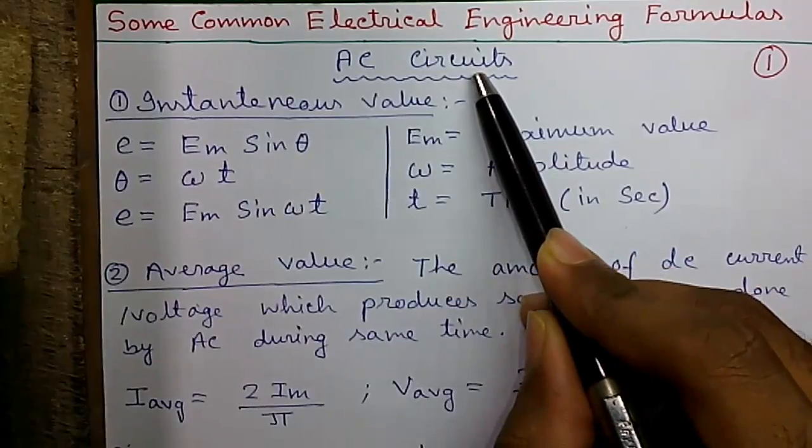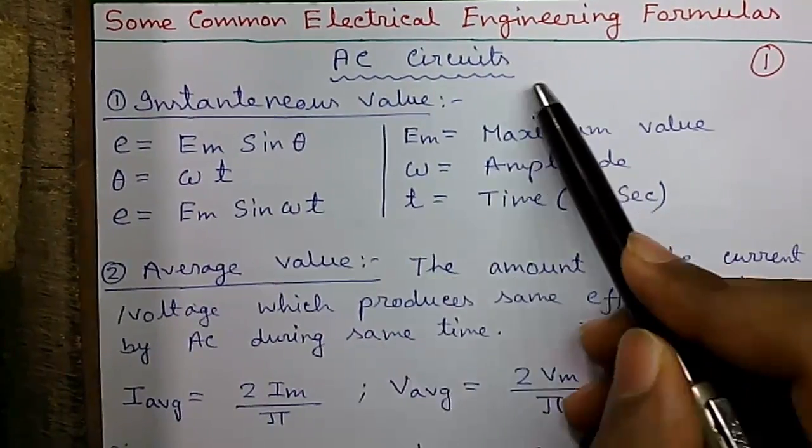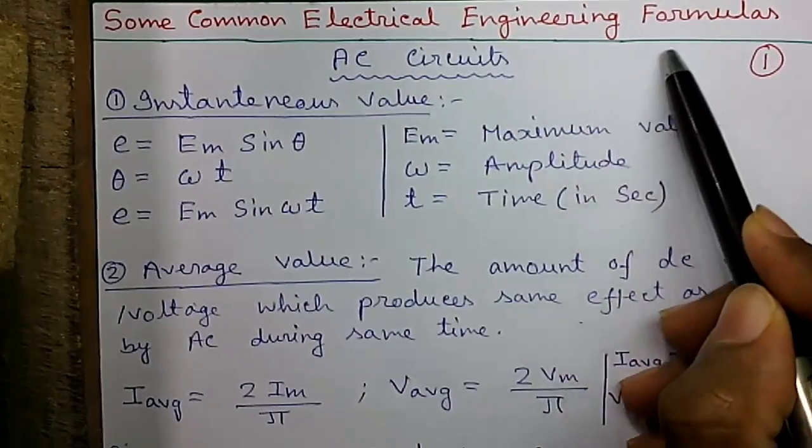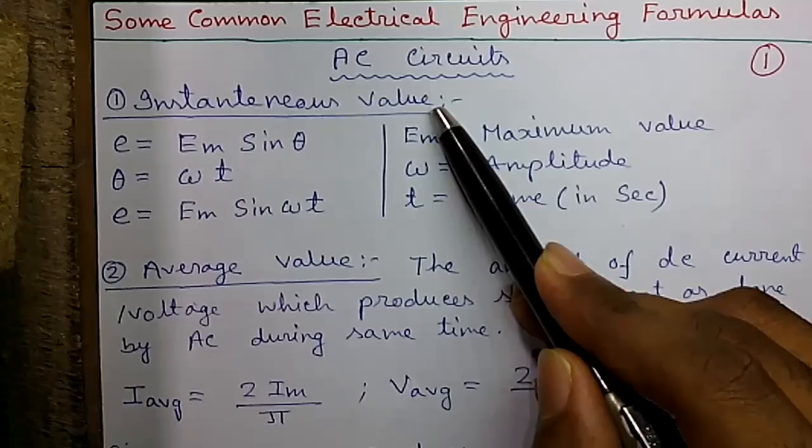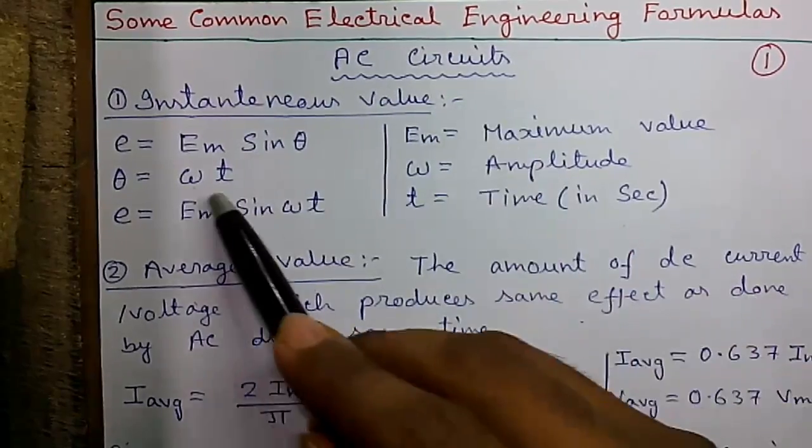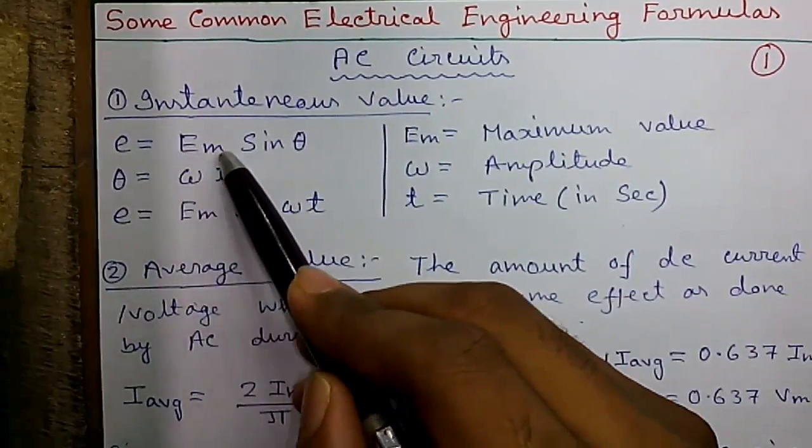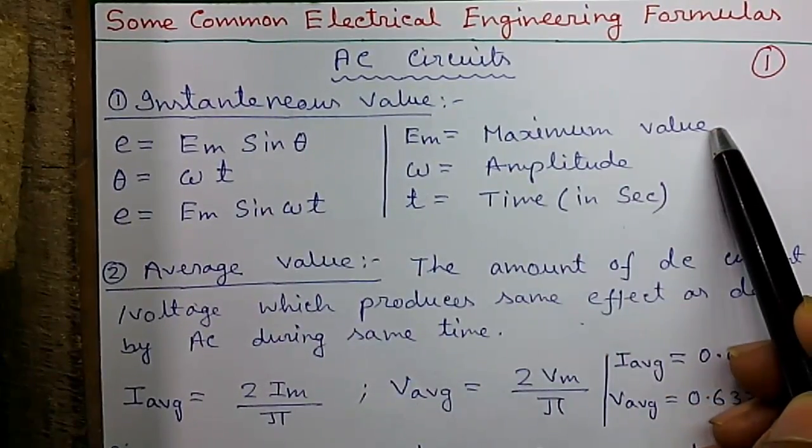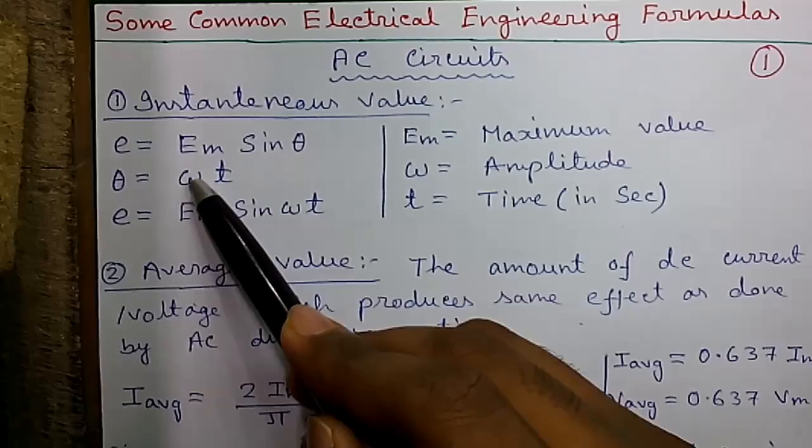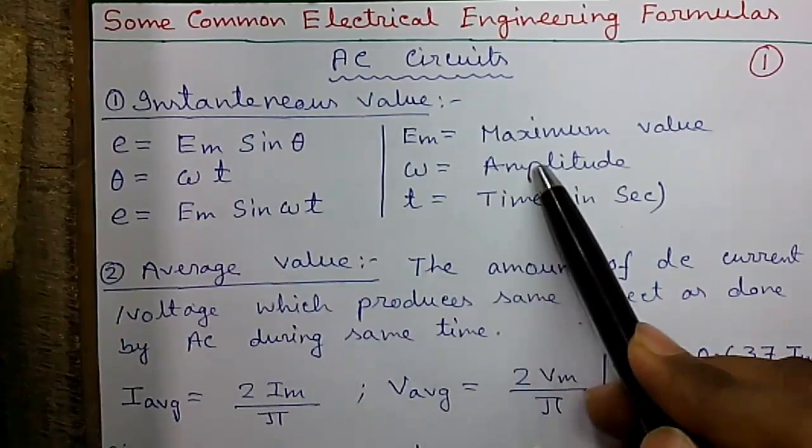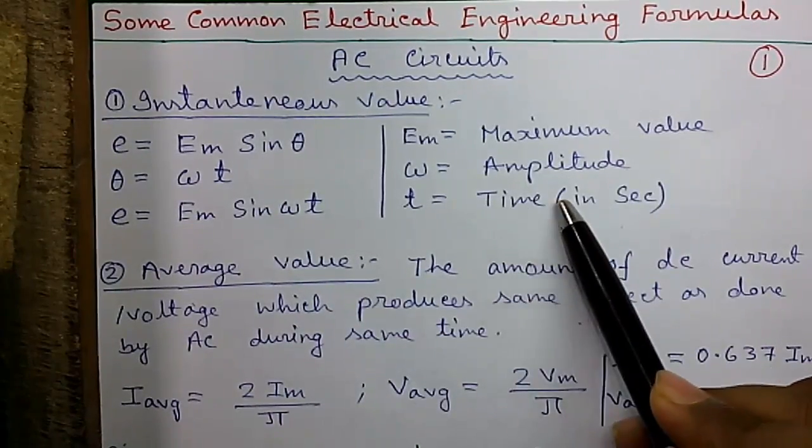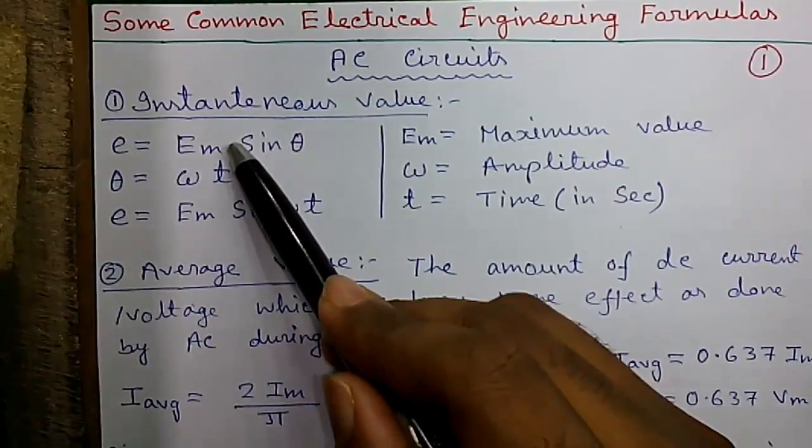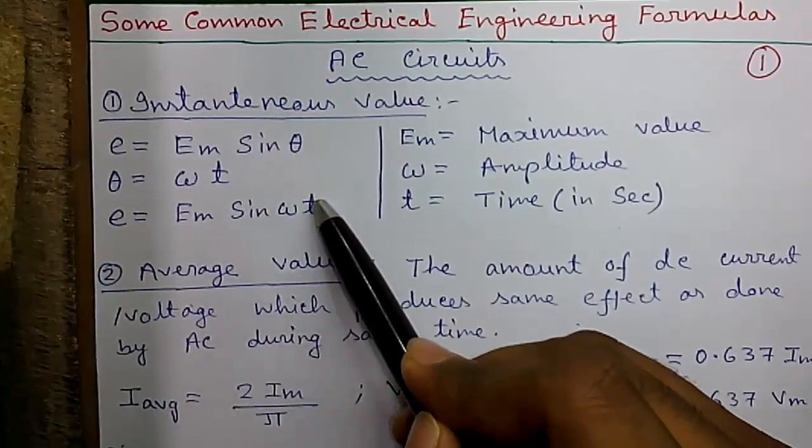So first we will start with some AC circuits formulas. Generally in AC circuits we deal with formulas related to sine wave. Instantaneous value of a sine wave is given by E equals Em sin theta where Em is the maximum value and theta equals omega t where omega is the amplitude and t is the time in seconds. You can write E equals Em sin omega t.